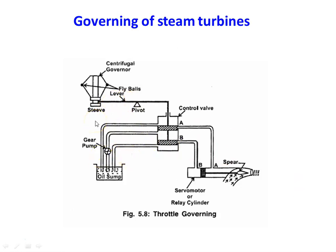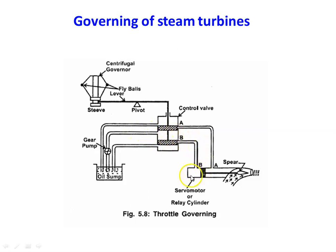When the load on the turbine decreases, the speed will increase. When the speed increases, the fly balls move upward, causing the sleeve to move upward. The left portion of the lever moves up, and the right portion moves downward due to the pivot. When the right side moves downward, valve B opens to the gear oil pump. The oil flows through valve B to the left side of the plunger, making the plunger move forward so the spear closes the nozzle. This reduces the steam flow to the turbine, bringing the speed back to normal.